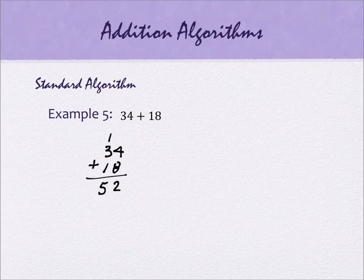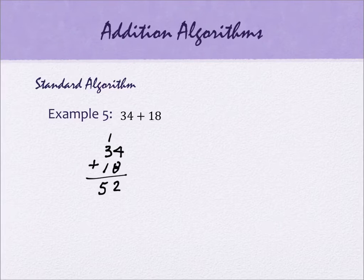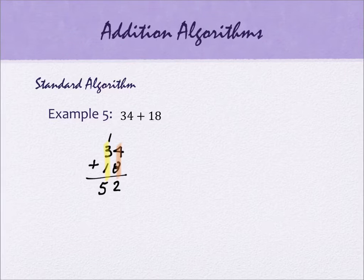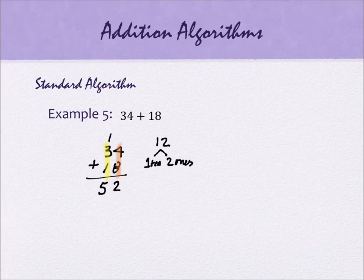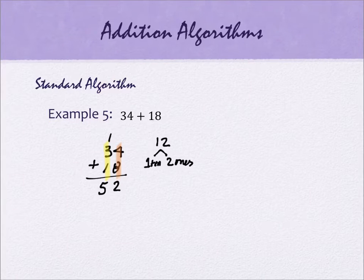The reason it's called regrouping is because 12 is one ten and two ones. The 2 gets written in the ones column, and the 1 gets regrouped into the tens column because its value actually is a ten. So it belongs in the tens column. On the flip side, the standard algorithm is exceptionally efficient — you can use it with longer values and many numbers added in a row.